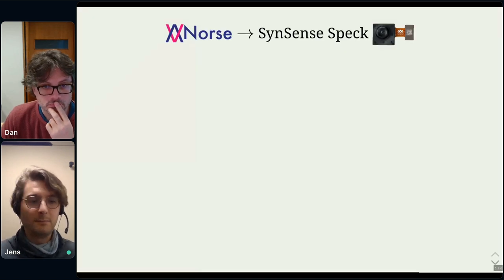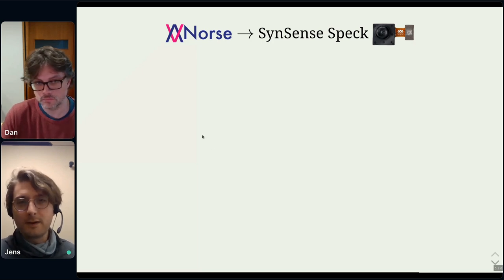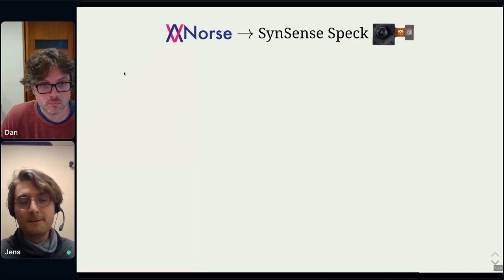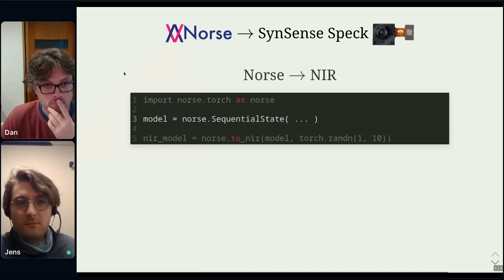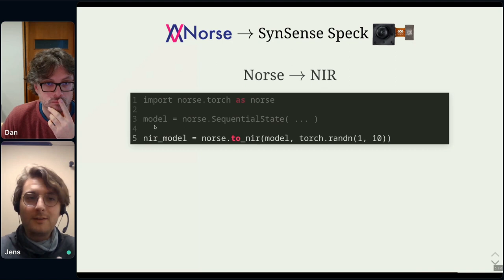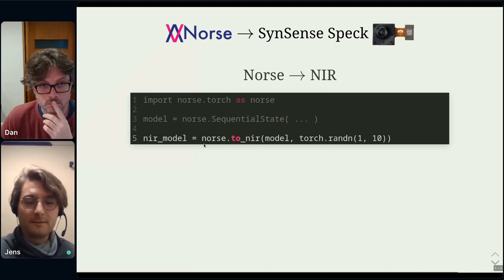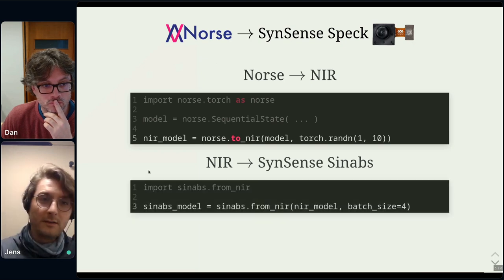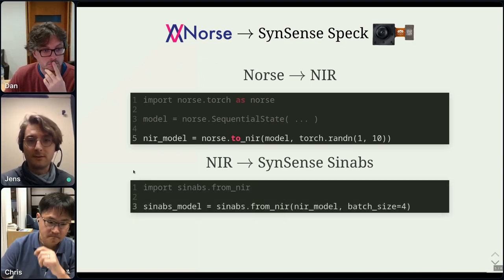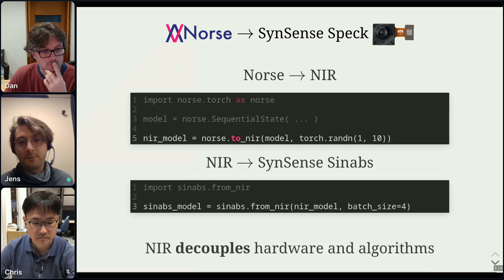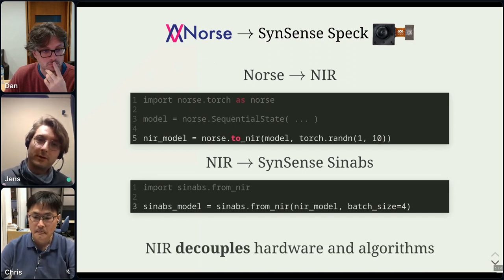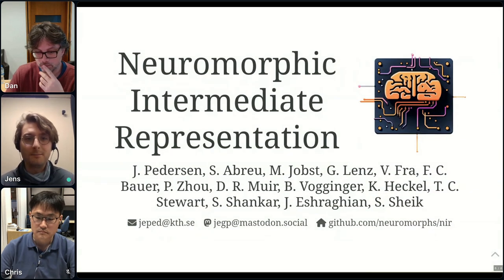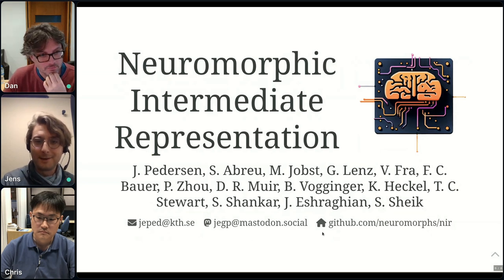NIR is not only a translation layer but also allows understanding of specific platforms in more detail. For example, to go from the Norse simulator to a SpiNNaker chip, you create a model in Norse, generate the NIR computational graph, and then convert to SpiNNaker from their library — a very quick operation. The goal is to make it as effortless as possible to decouple the work done in hardware from the work done in algorithms. Please drop by our poster and GitHub.